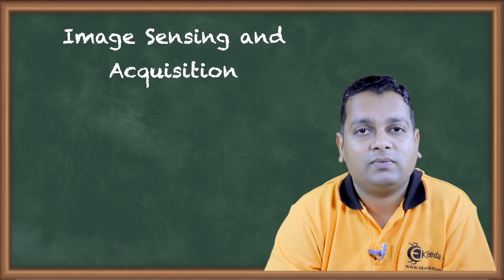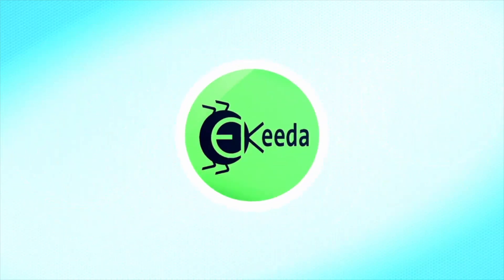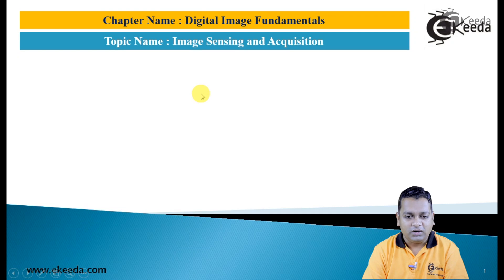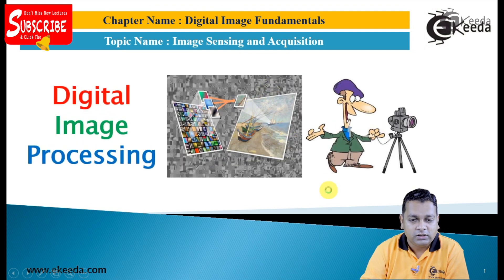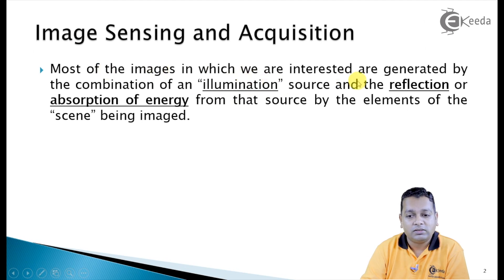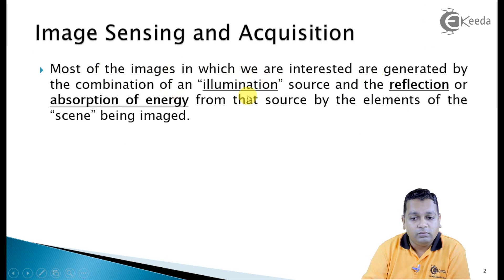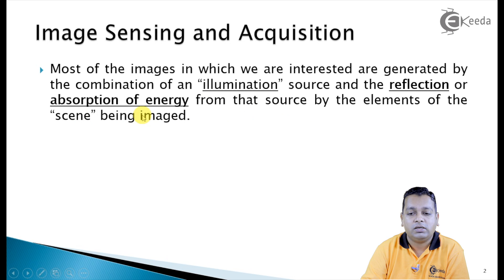Let us begin with the topic image sensing and acquisition from digital image fundamentals, which is part of digital image processing. Most of the images we are interested in are generated by the combination of an illumination source and the reflection or absorption of energy from that source by elements of the scene being imaged.